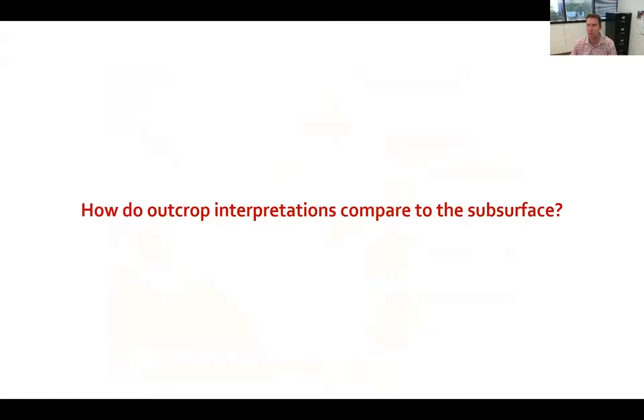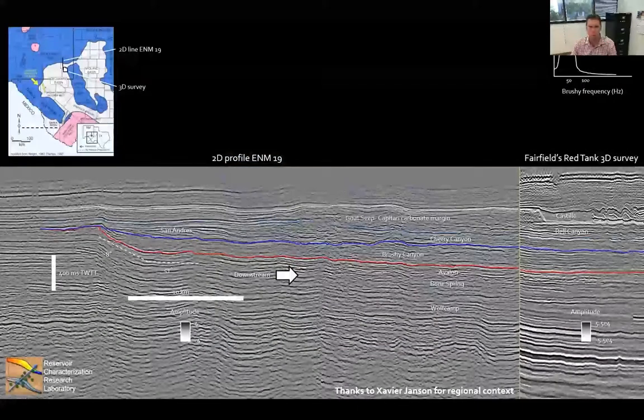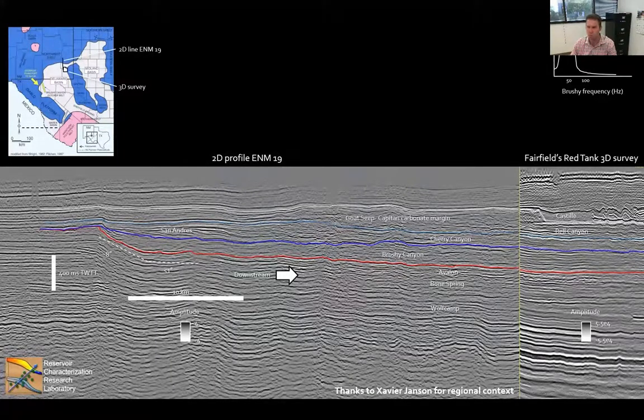So how do these outcrop interpretations compare to the subsurface? Let's take a look based on Fairfield's 3D seismic data. Here is that location map again, and now we've indicated the location of Fairfield's Red Tank survey in southeastern New Mexico. The next slide is going to show a cross section of the Guadalupian shelf margin that leads down into the basin into the Red Tank survey. To the left is a line that's courtesy of our good colleagues at BEG's Reservoir Characterization Research Lab. To the right is where that 2D line intersects with Fairfield's Red Tank 3D survey.